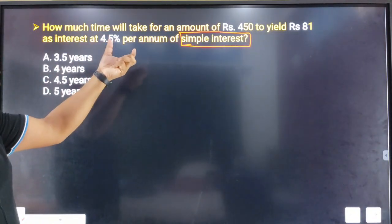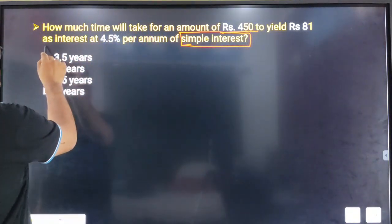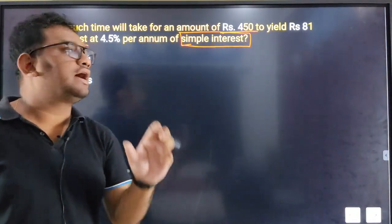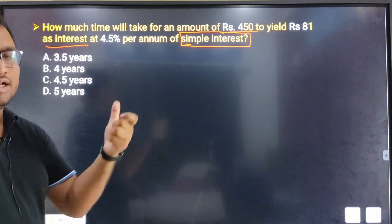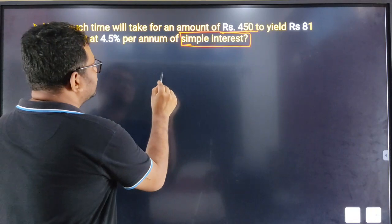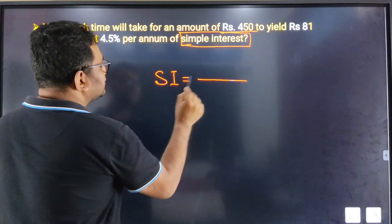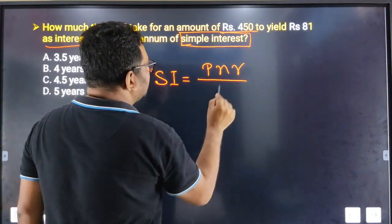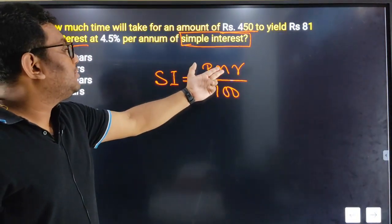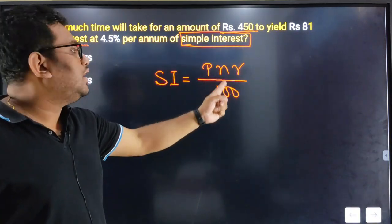How much time will it take to yield 81 rupees as interest at 4.5 percent? We have the simple interest formula: Simple Interest equals P multiplied by N multiplied by R, divided by 100. Here, the principal P is 450 rupees, the rate R is 4.5%, and N is the number of years we need to find.